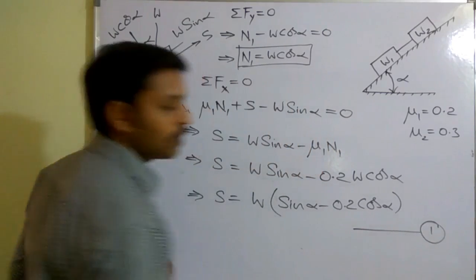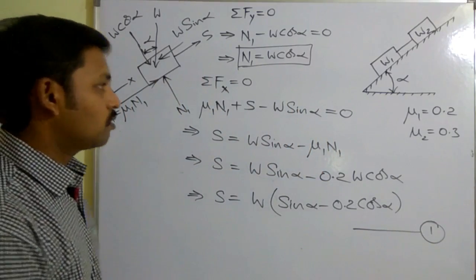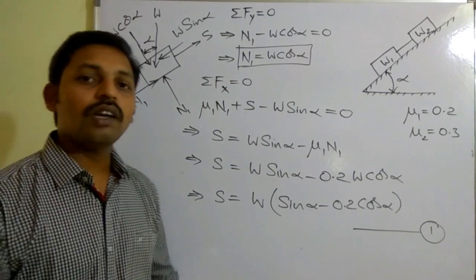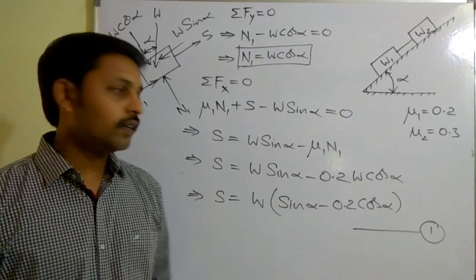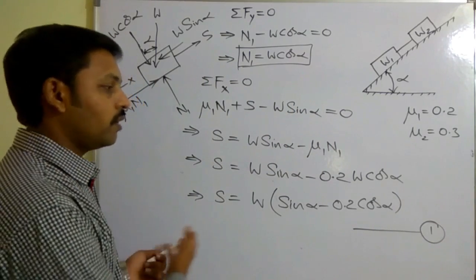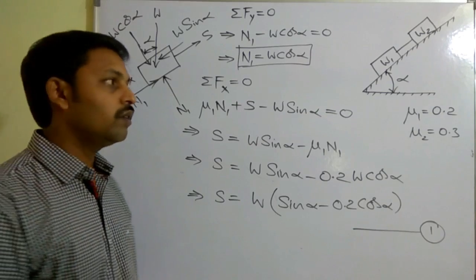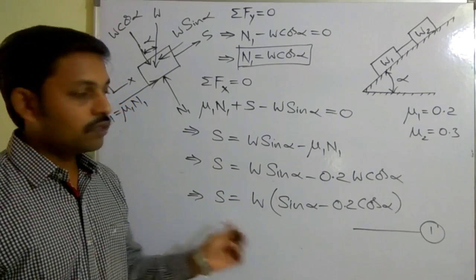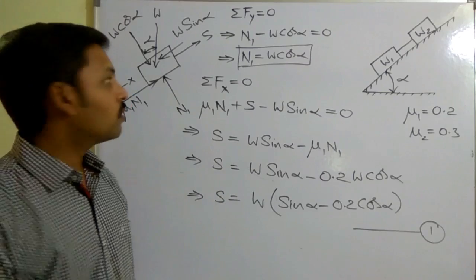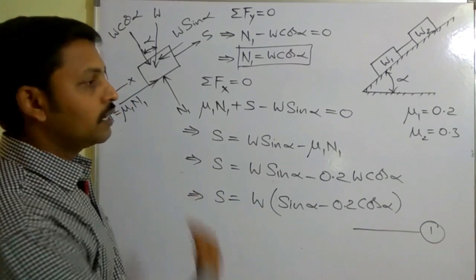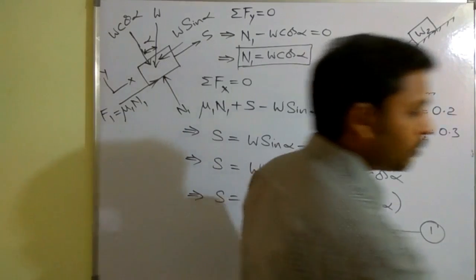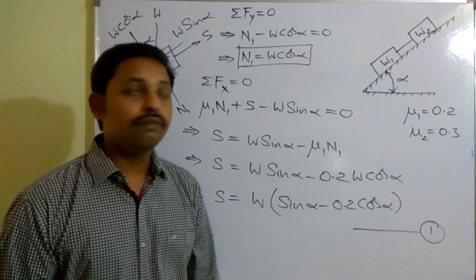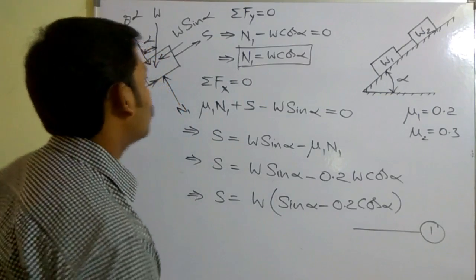Taking W as common: S equals W times (sin alpha minus 0.2 cos alpha). Consider this as Equation 1. Here I want to eliminate S because it is not asked to calculate S — eliminating S will allow me to find the value of alpha. Now let us consider the free body diagram for the second block.